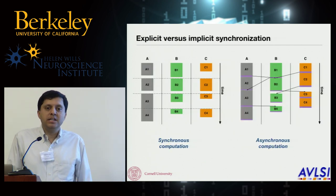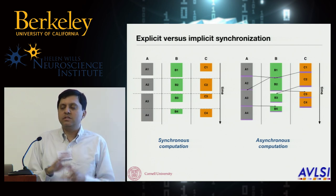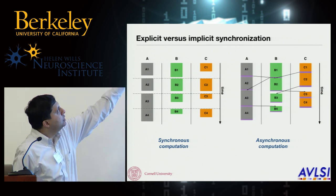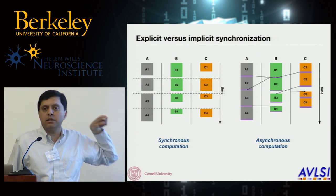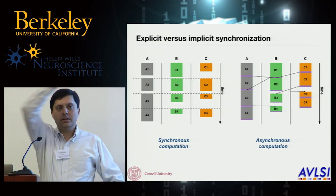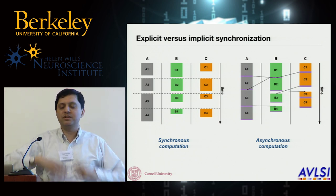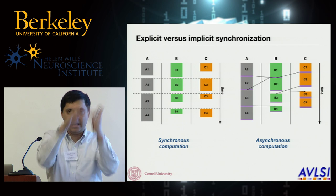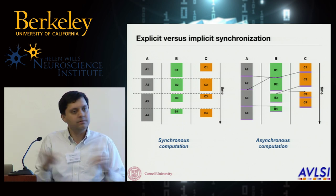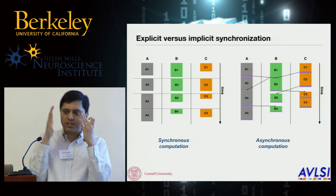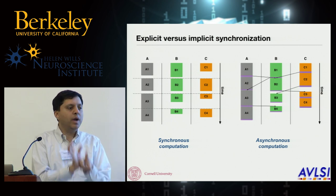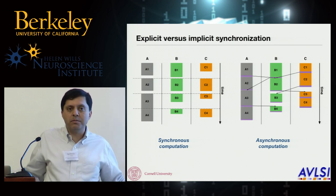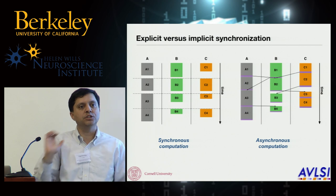The other big difference is how information is synchronized across the computation. In a clock system, you have temporal synchronization — global barrier synchronization demarcated by the clock. Every computation has to be done before the barrier, and at the barrier, information is exchanged globally. In an asynchronous computation, instead you send explicit messages: I only wait for the things I depend on, not for anything else in the system, because there's no global barrier — it's local synchronization based on message passing.